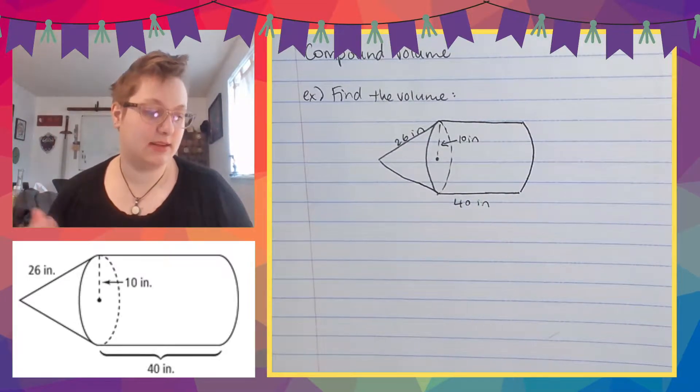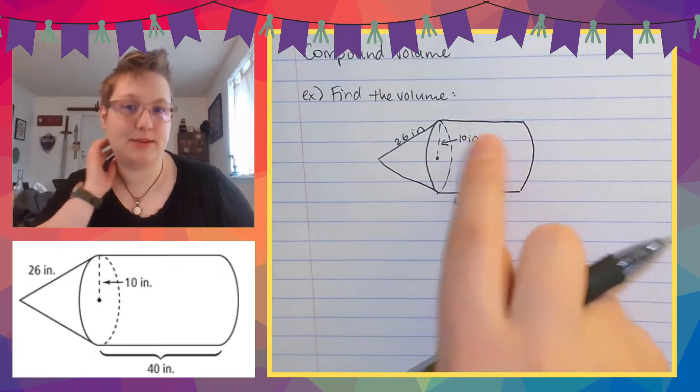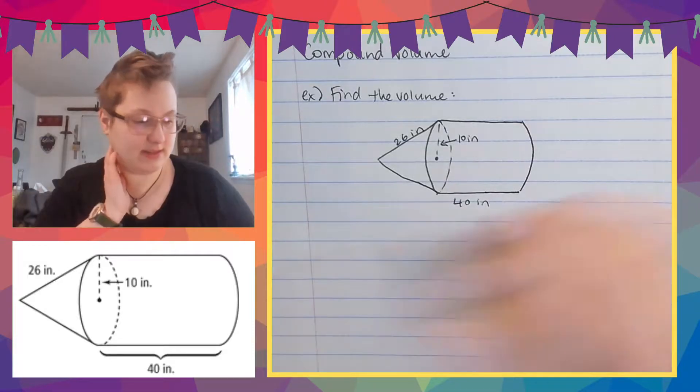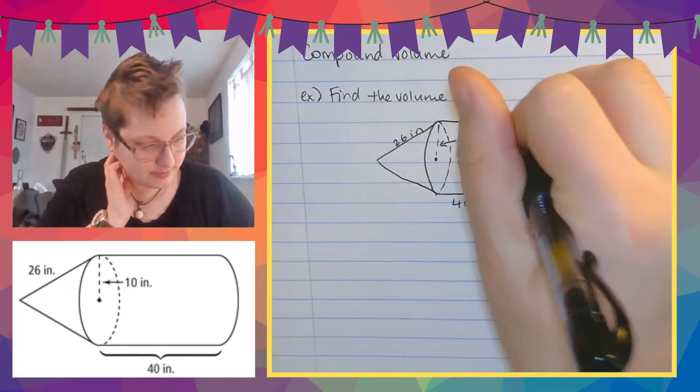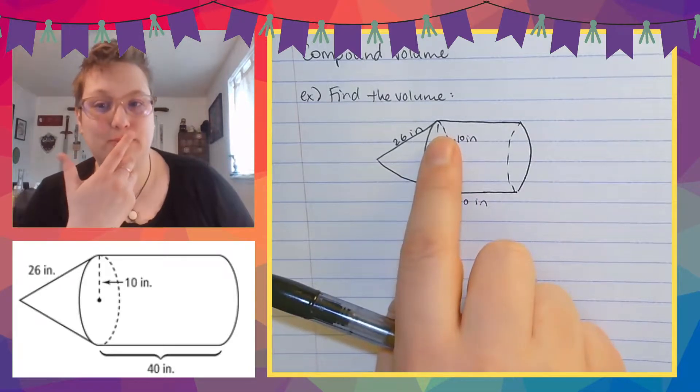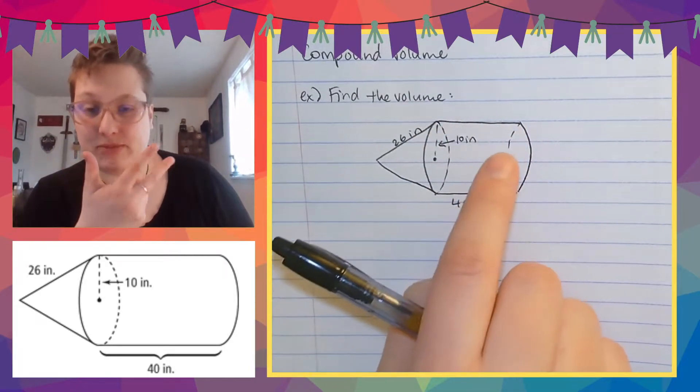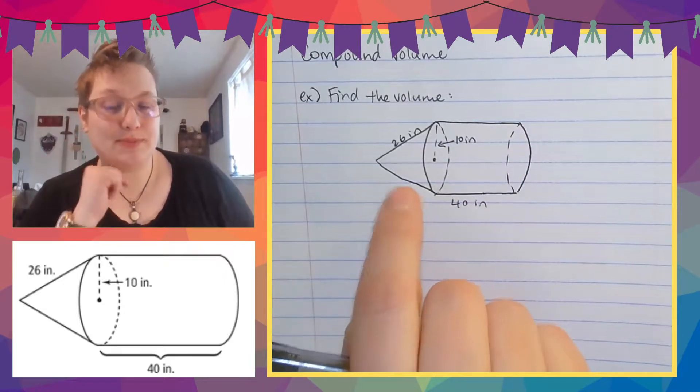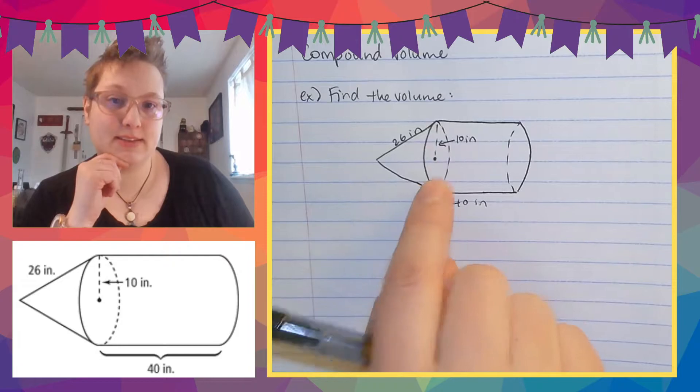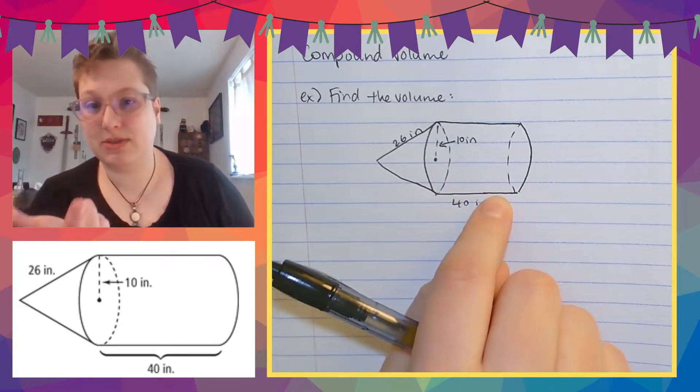So let's just start with the easier part. So let's start with the base here. So the base of this, oh whoops, I feel like I need this part too. There we go. So this is a prism because the top and the bottom are the same, right? They're both circles. So what I'm going to do is figure out the area of this and then multiply it by the height, which is 40.